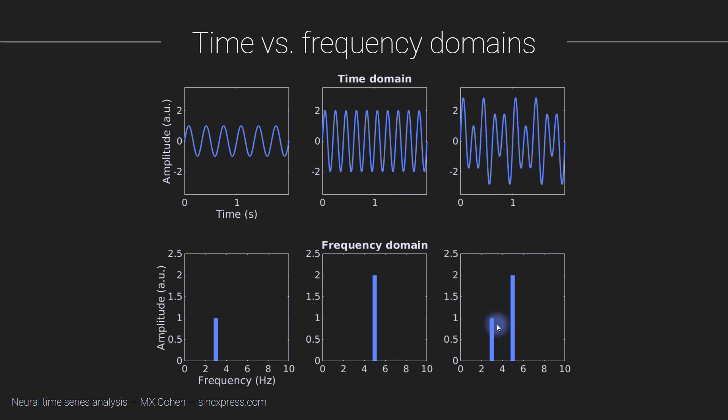You look at this signal in the frequency domain and it takes like 50 milliseconds to figure out that this signal has two components—one at three Hertz with an amplitude of one and one at five Hertz with an amplitude of two.